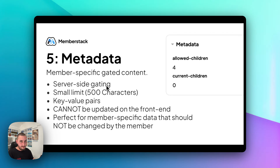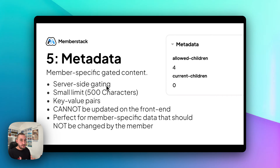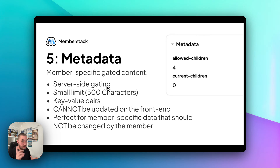This cannot be updated from the front end — this can only be updated in the back end. That means users clicking buttons performing some kind of action are not going to be able to update the metadata, which is great for stuff like this. It actually needs to be passed through in the back end. For example, we have an automation for this where when the member purchases a higher plan, it will update the amount of allowed children that they can have. For anything that is specific to that member, needs to be secure, and you do not want them to be able to update it on their own — this is a perfect way of going about it.